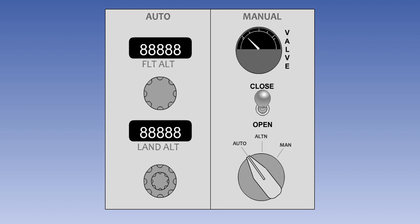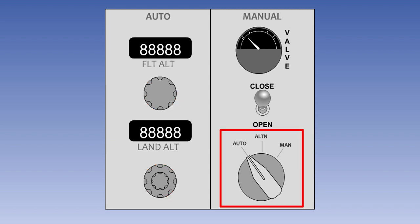The cabin pressurization control panel is remote from the pressurization controller, and will generally be fitted in the overhead panel on the flight deck. The control panel may have rotary knobs for the pilot to set the expected cruise altitude and the elevation of the landing airport. In a typical system, there are three modes of operation: auto, alternate, and manual.